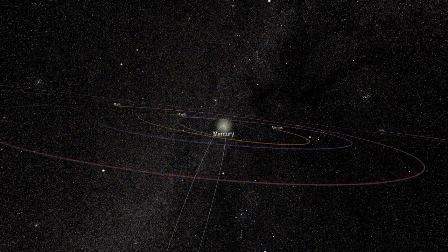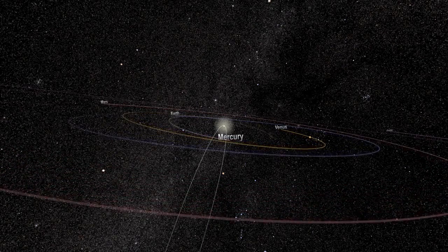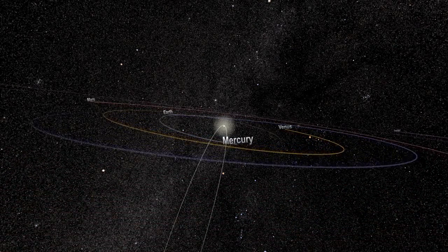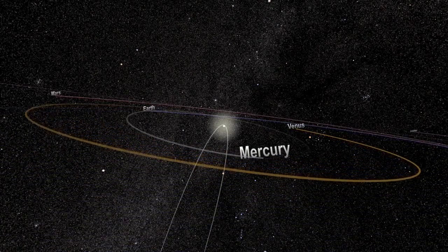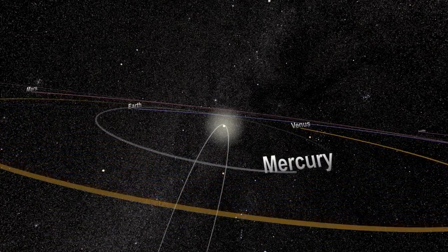Many sungrazing comets follow a similar orbit, called the Kreutz path, and collectively belong to a population known as the Kreutz group. In fact, close to 85% of the sungrazers seen by the SOHO satellite are on this orbital highway.